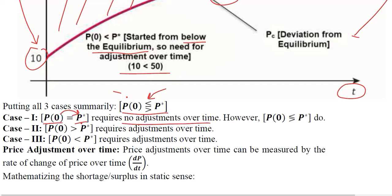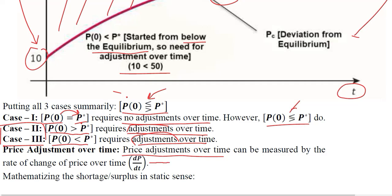When we don't start from the equilibrium, we have the possibilities of adjustments over time — either we start from above the equilibrium or below it. These two cases are more interesting and attention-worthy because they require adjustments. We are going to model these adjustments in an equation; they are adjustments in price over time, so we take a derivative term to represent that.